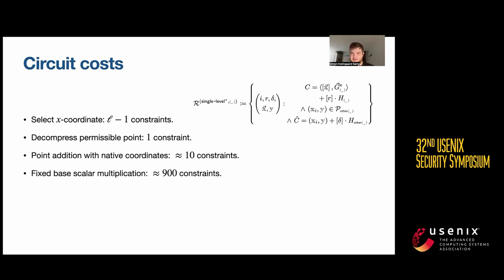Finally, the fixed-base scalar multiplication in order to do the randomization of this secret point that you have opened is going to take around 900 constraints.